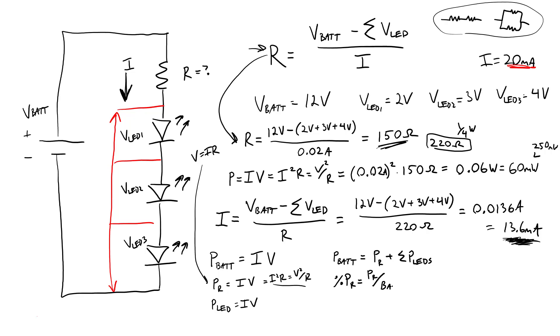You can calculate the percent of power from the battery that is dissipated by the resistor by dividing that resistor power by the battery power. And you can calculate the overall efficiency of the circuit or how much of the electrical power from the battery is actually converted to light by the LEDs by dividing the power of all of the LEDs by the power from the battery.